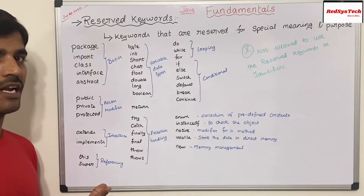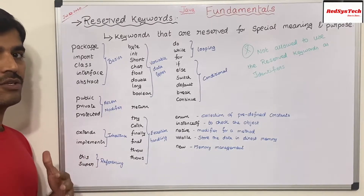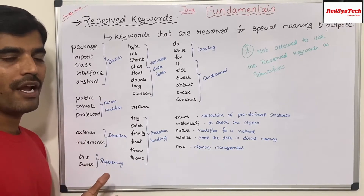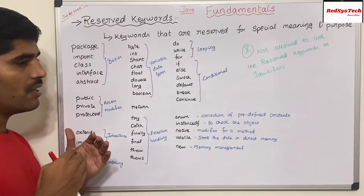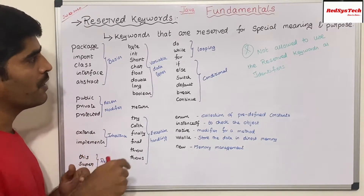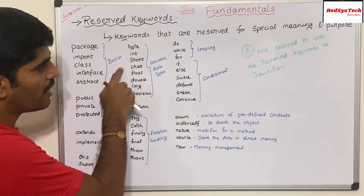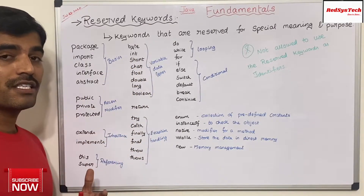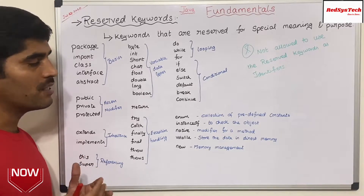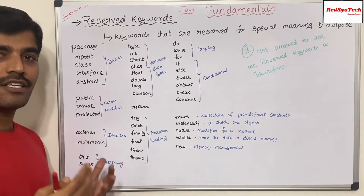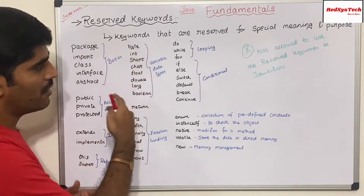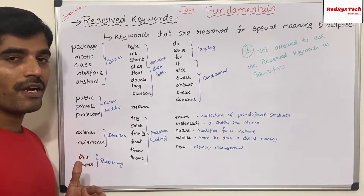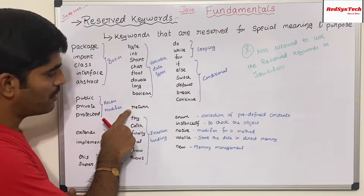When I'm writing a class, I have to define some variables and methods. Whatever variables I define in Java should be stored in memory — the memory allocated is based on the data type of that variable. So the data types are: byte, int, short, char, float, double, long, boolean. For example, if I want to store data with decimal points, I use float; for integer values, I use int. And there is the keyword 'return' — when I want to return something back from a method, I use the 'return' keyword.